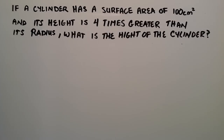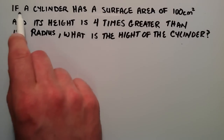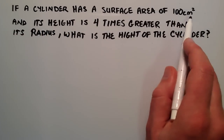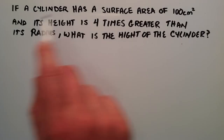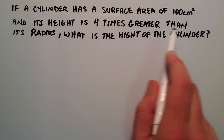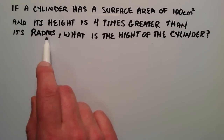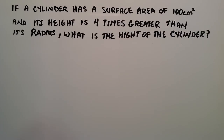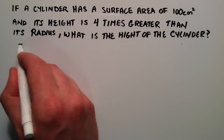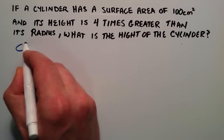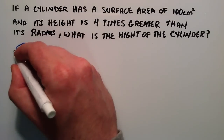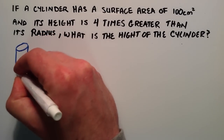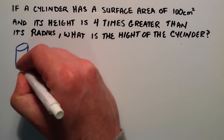The question we're looking at is: if we have a cylinder with a surface area of 100 square centimeters, and its height is four times greater than its radius, then what is the height of the cylinder? Let's go ahead and draw a cylinder to start. We have a circle for the top, then our sides that come down, and on the bottom we have another circle.